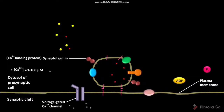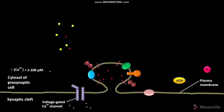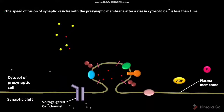The cytosolic Ca2+ ions then bind to synaptotagmin. Due to this Ca2+ binding, the synaptotagmin undergoes a conformational change. The synaptotagmin with changed conformation then causes the fusion of the docked uncoated synaptic vesicle with the plasma membrane of the presynaptic cell. The speed of fusion of synaptic vesicles with the presynaptic membrane after a rise in cytosolic Ca2+ ion concentration is less than 1 millisecond.